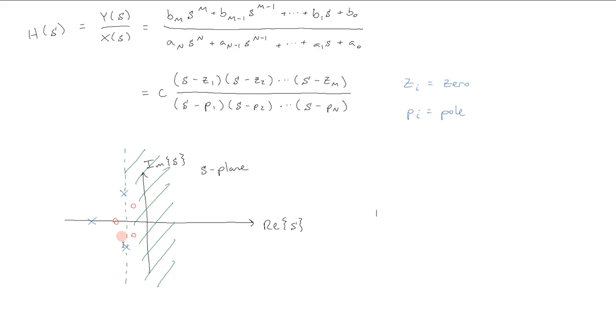And once again, we have a region of convergence that is associated with this Laplace transform, which tells you for which values of s the transform h of s actually converges. If the j omega axis is in the region of convergence, then the Fourier transform of h of t exists.